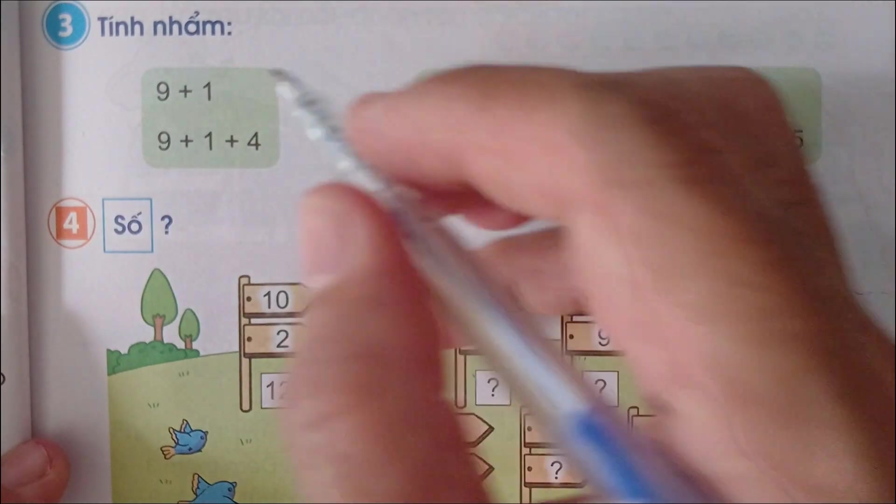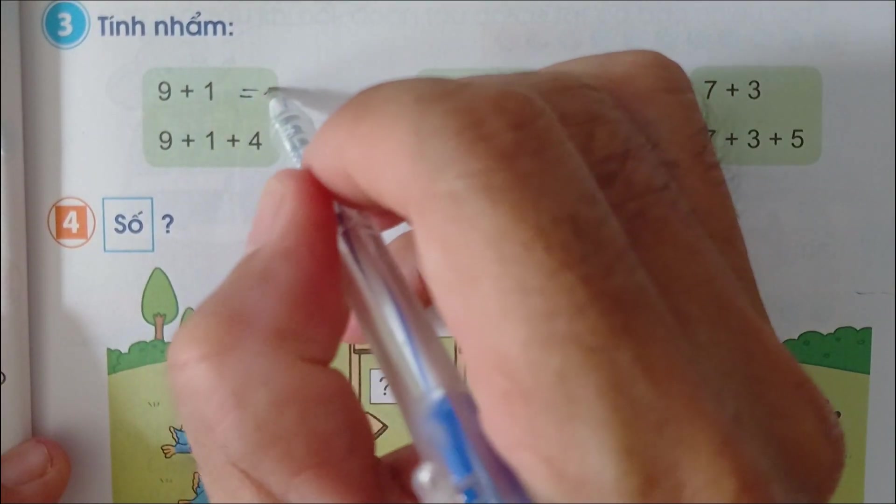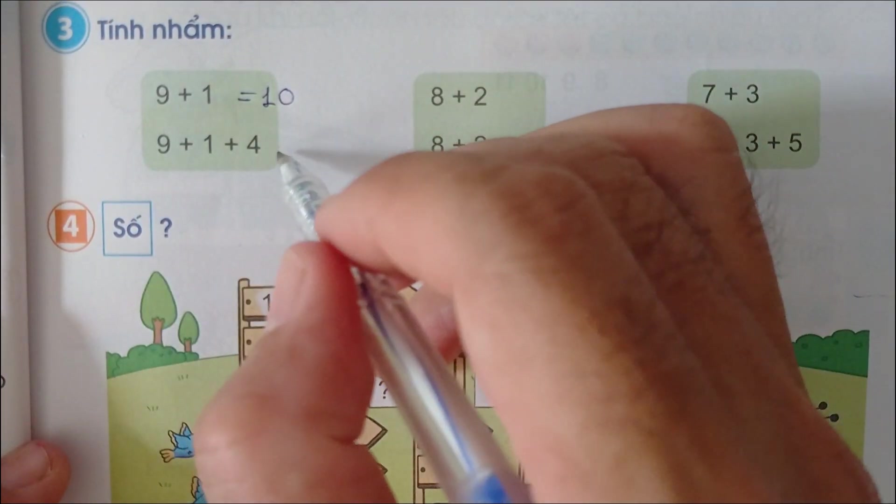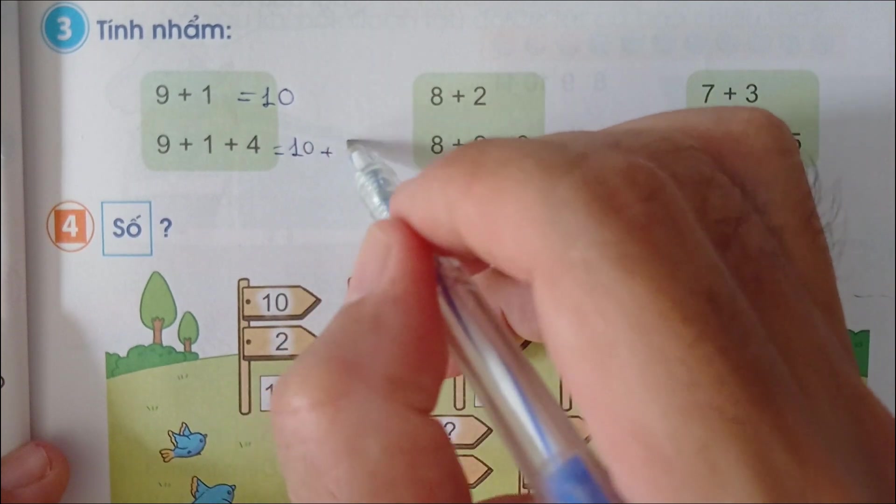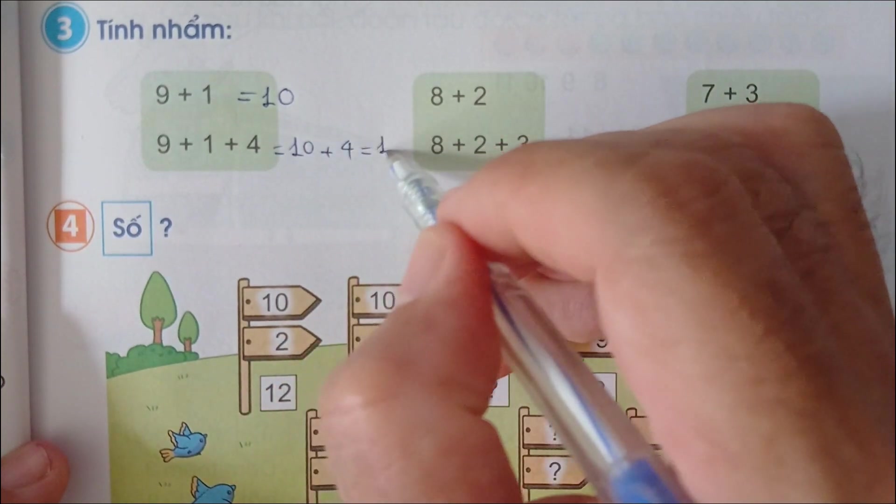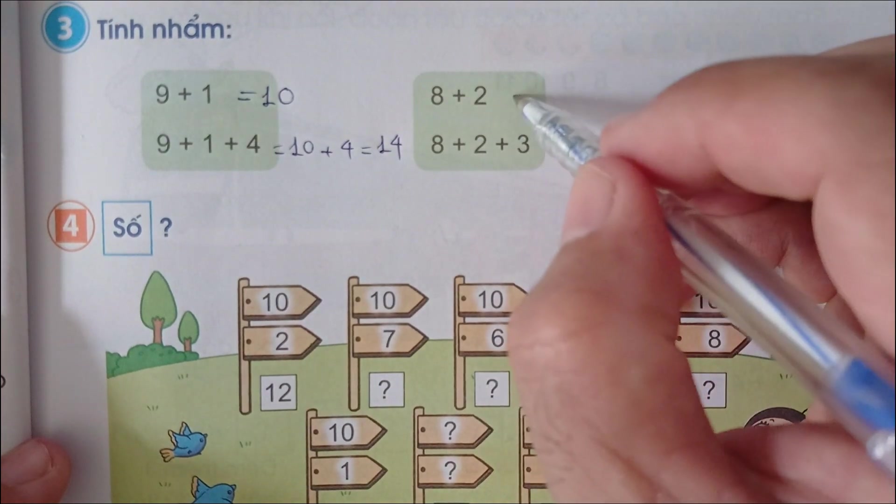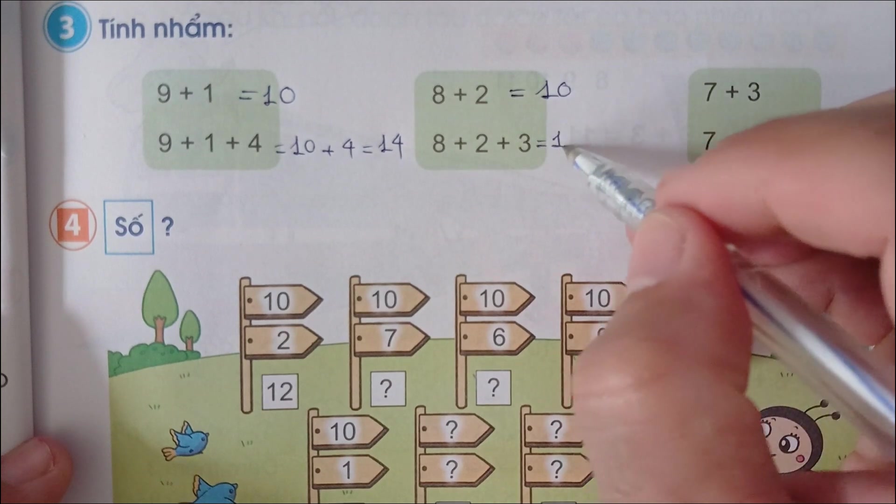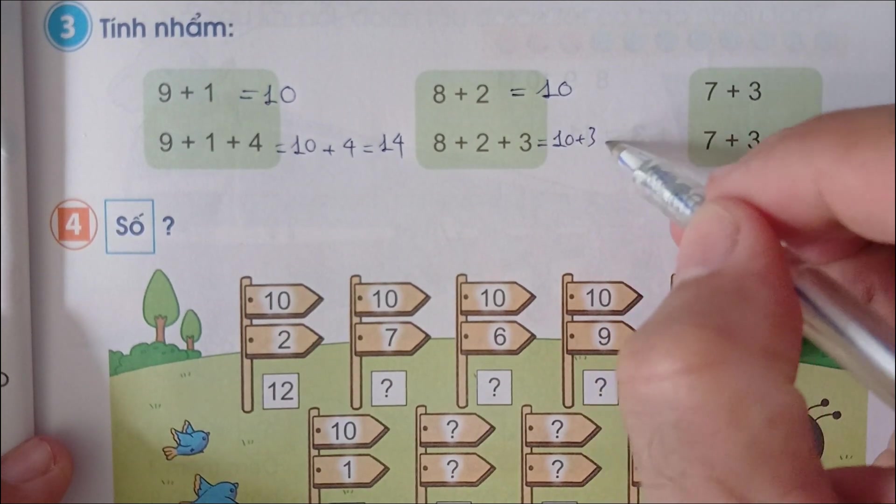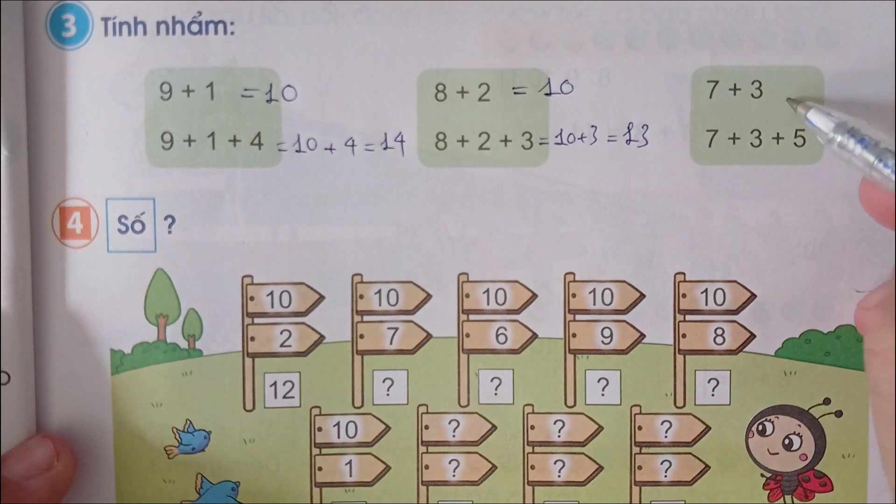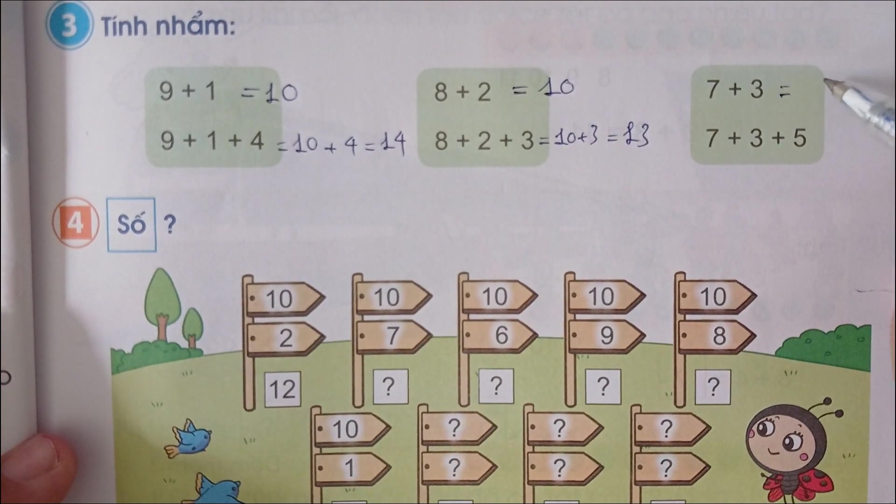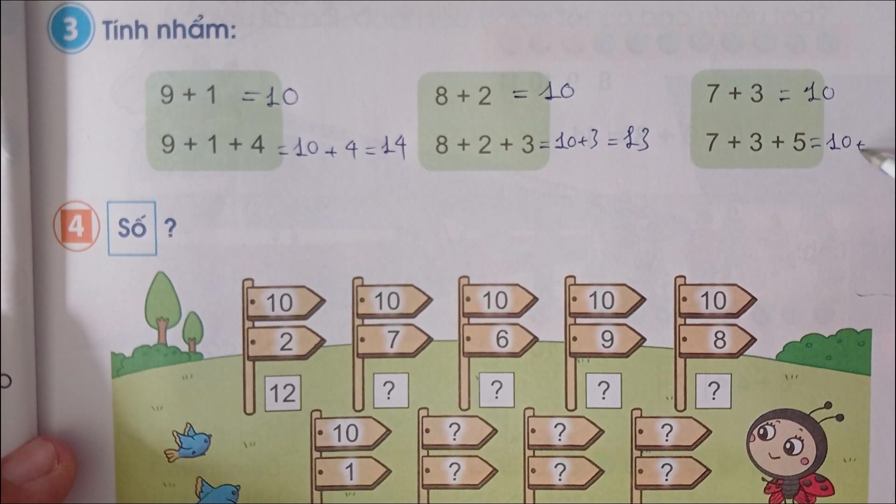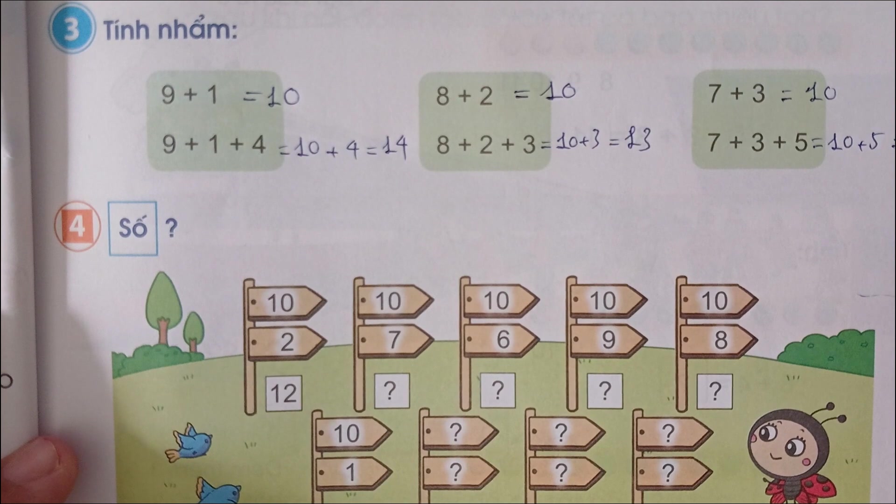Bài 3, tính nhẩm: 9 cộng 1 bằng 10. 9 cộng 1 cộng 4 bằng 14. 8 cộng 2 bằng 10. 8 cộng 2 cộng 3 bằng 13. 7 cộng 3 bằng 10. 10 cộng 5 bằng 15.